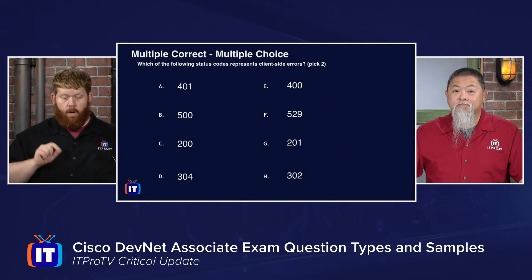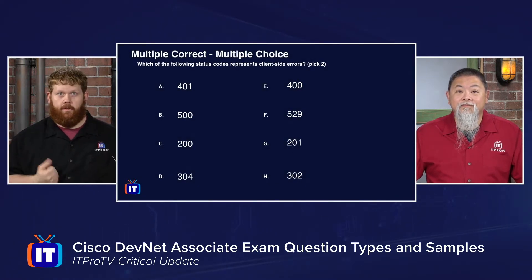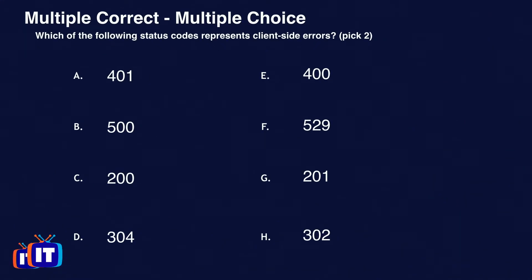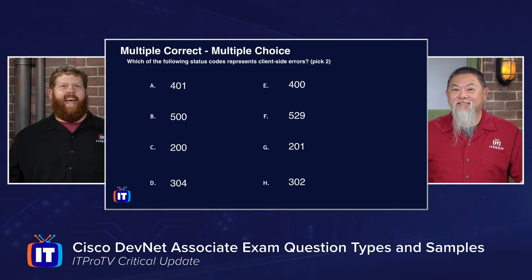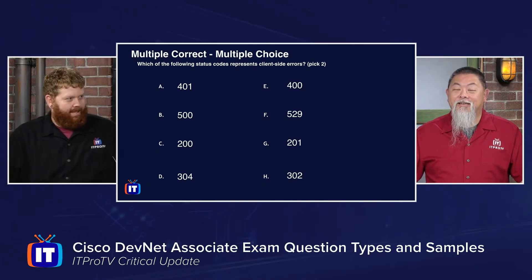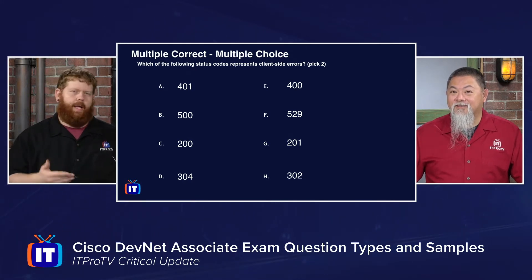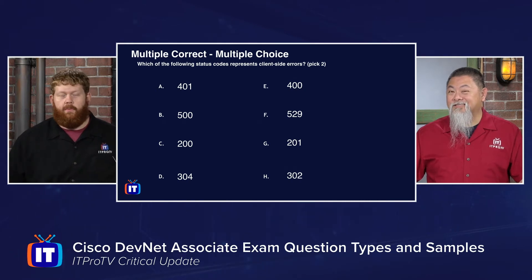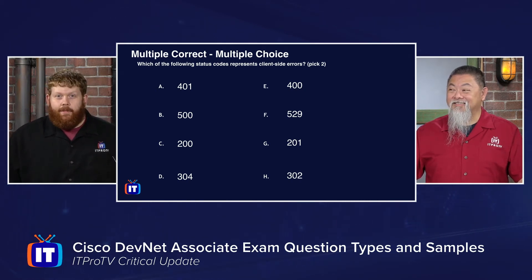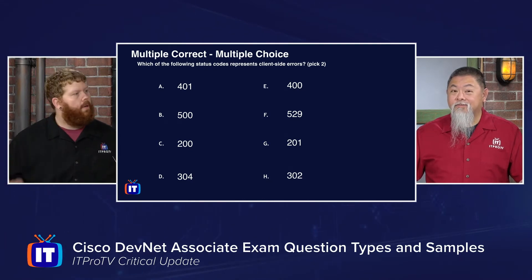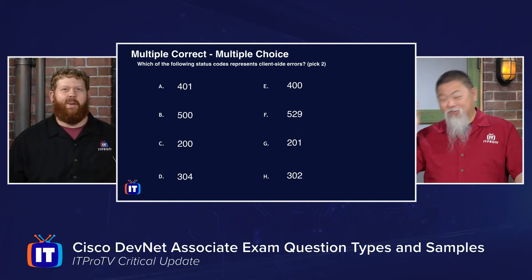Along with multiple choice, we can have multi-select. The question is: which of the following status codes represents client-side errors? The options are 401, 400, 500, 529, 200, 201, 304, and 302 — HTTP status codes associated with HTTP responses. Ronnie does a process of elimination: 200s are success codes, 300s are successful redirects — those are eliminated. It comes down to 400s and 500s. Ronnie picks 401 and 400, which is correct — 500s are server-side errors, 400s are client-side errors.